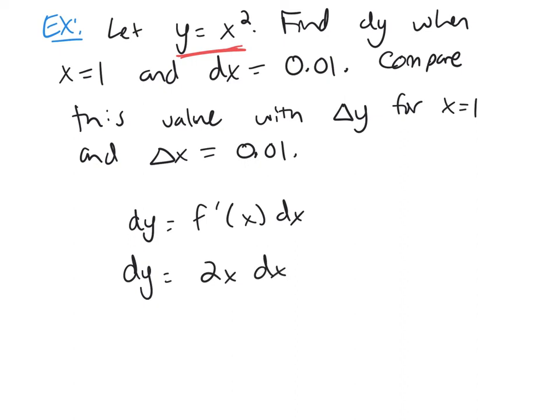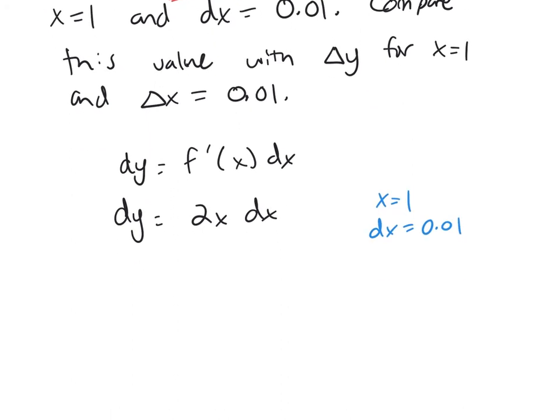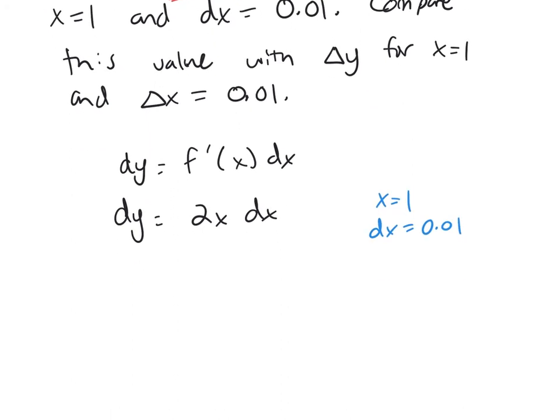And now we're going to plug in, we were told that x equals 1 and dx is 0.01. So we're going to plug both of those in to find dy now. dy will be 2 times 1 times 0.01. So dy is 0.02.